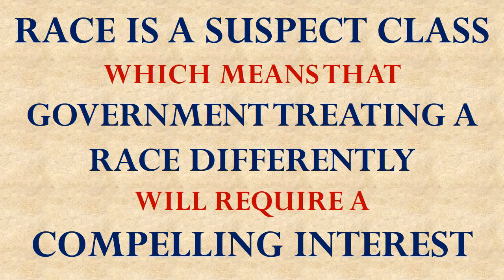Please keep in mind that these various tests — creating suspect classes and requiring compelling interest — none of that is actually in the Constitution. This is just doctrine the court has developed. So while the Constitution may be written in seemingly absolute terms, that no state will deny people equal protection of the law, the courts create exceptions all the time and just have to decide whether you have a good enough reason for the exception. What they require for situations where somebody is treated differently because of their race is a compelling interest.